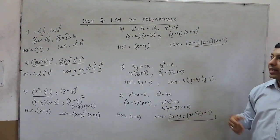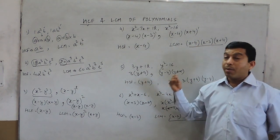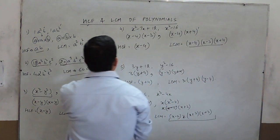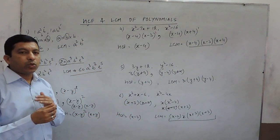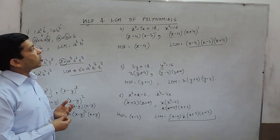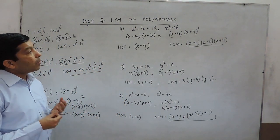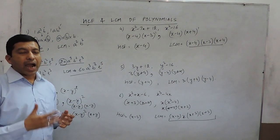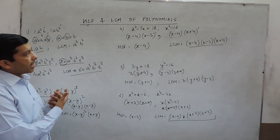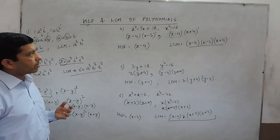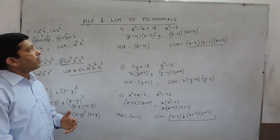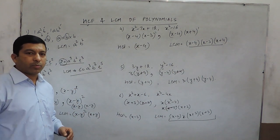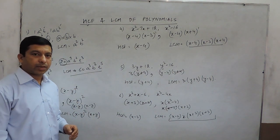This is how to find the HCF and LCM of polynomials. Before this chapter, we must be clear on how to take common terms, and how to factorize expressions whether they have 2, 3, or 4 terms. Only then should we approach the chapter on LCM and HCF of polynomials. Thank you.